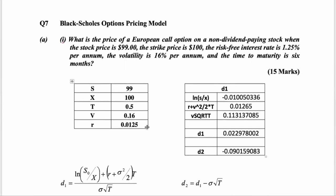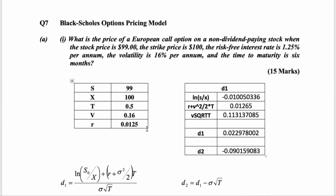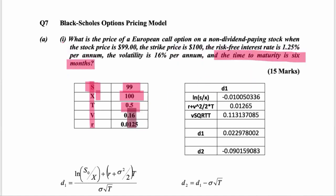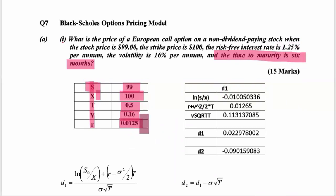I worked this up in Excel, so we're going to work through all of this together. There are your abbreviations: stock price 99, strike 100, time to maturity was six months - remember you need to express that as a decimal, so 0.5. Volatility is 16%, so we express it as 0.16. The risk-free interest rate is 1.25% - this caught a few people out previously. You need to divide by 100, so 1.25% divided by 100 is 0.0125. Just be careful not to write 0.125, which would be 12.5%.